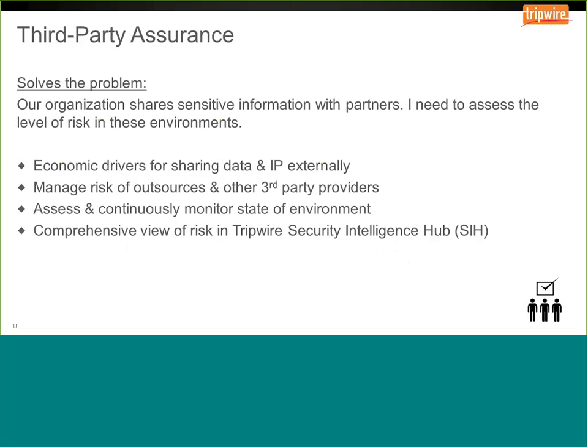For third-party assurance — partner networks, supply chain, or any outside organization that you give access to your sensitive data or network — as we hear in the news, attackers often make their way in through a partner. This underscores the need to assess risk in those environments. The key here is making it very easy to set up. You don't want to burden your partner with having to set up a device. The secure connector is a quick and easy way to gain visibility into risk in these networks.